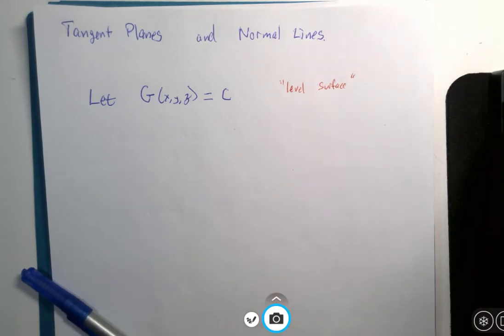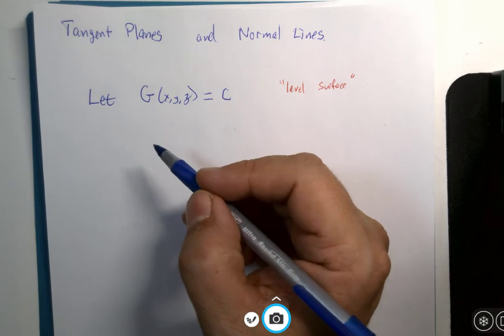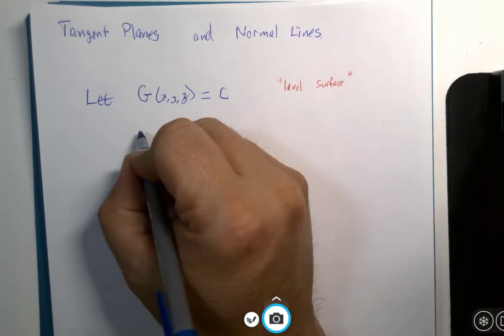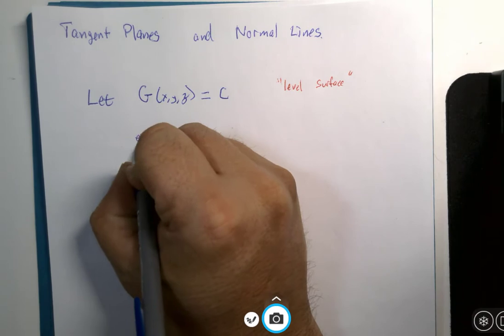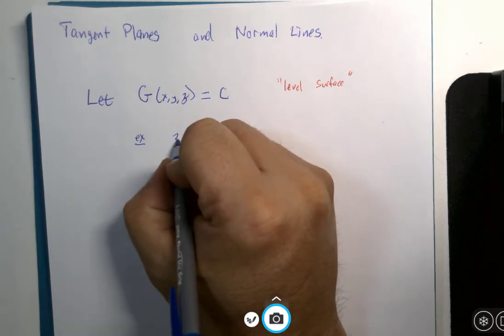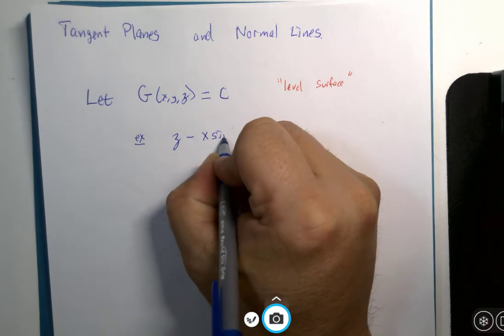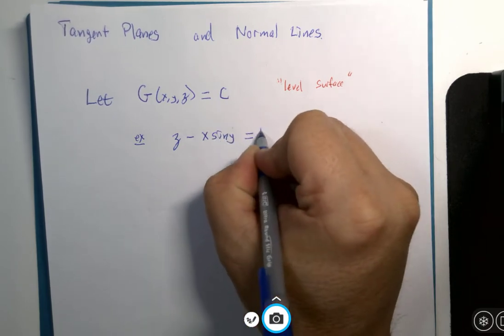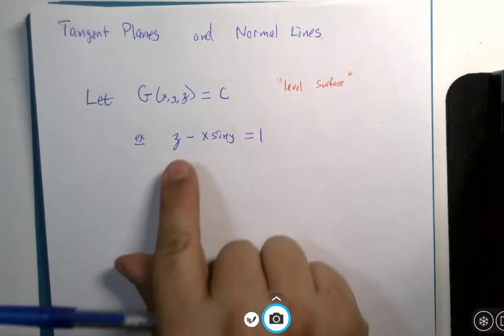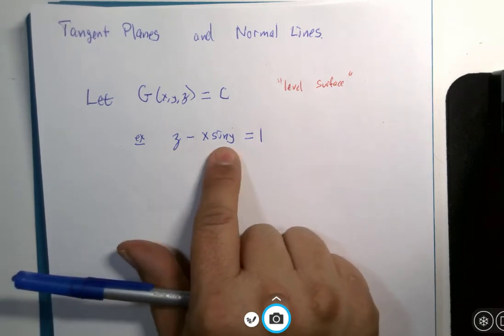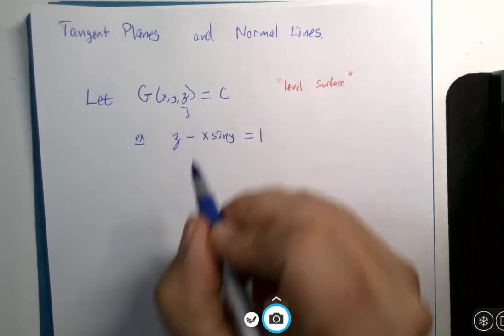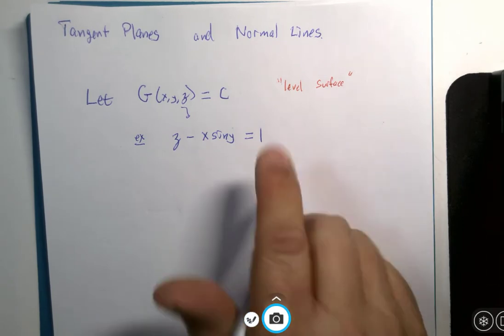And as an example of that, let's just see this one: z minus x sine y equals 1. So here is a three variable function, that would be G equal to some constant.